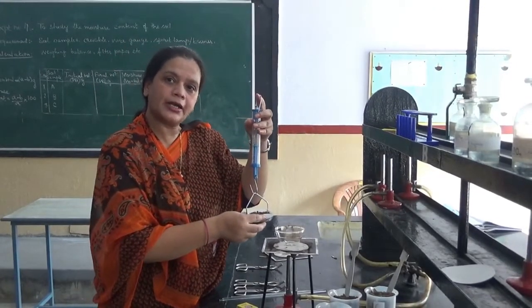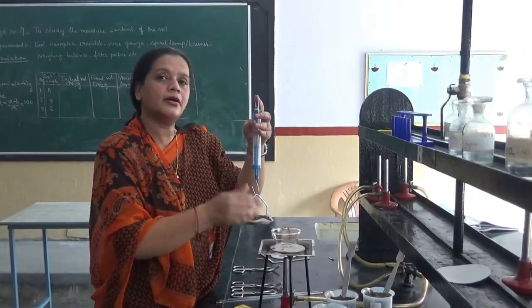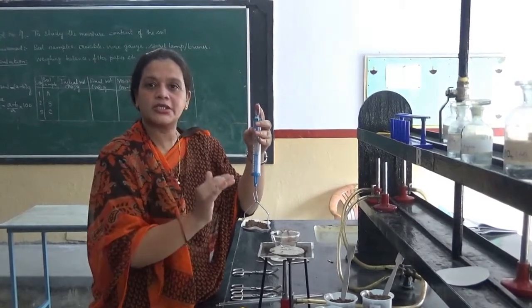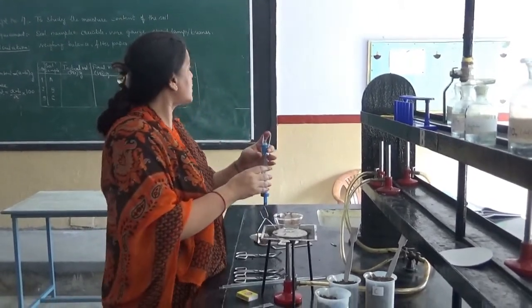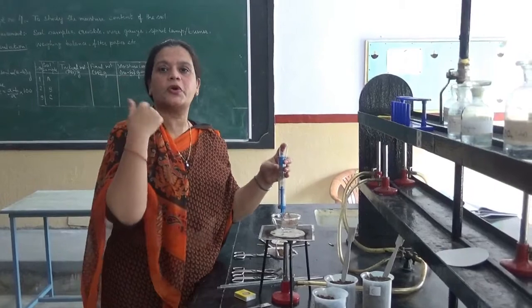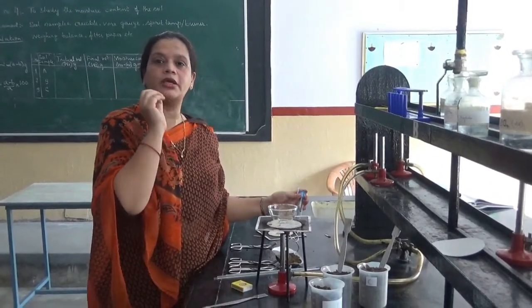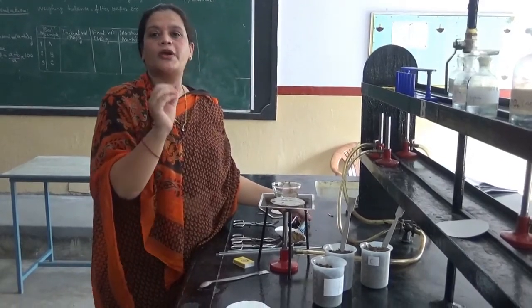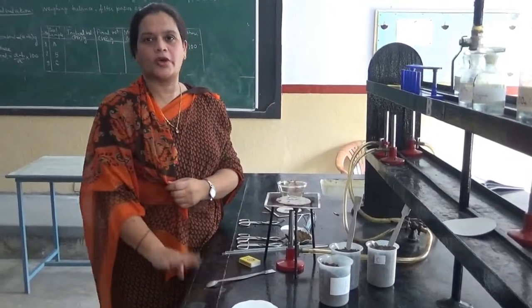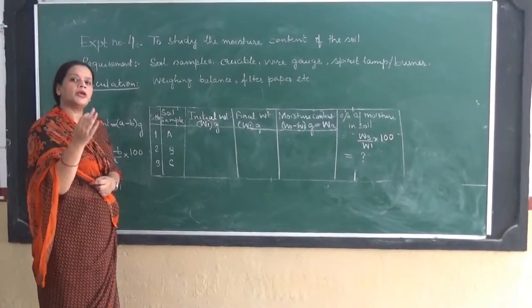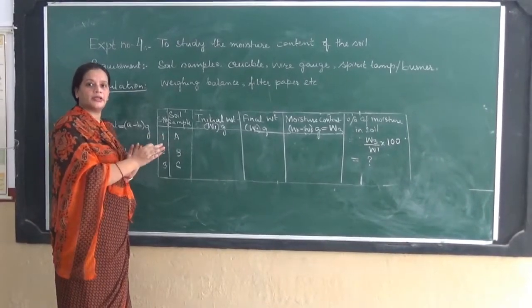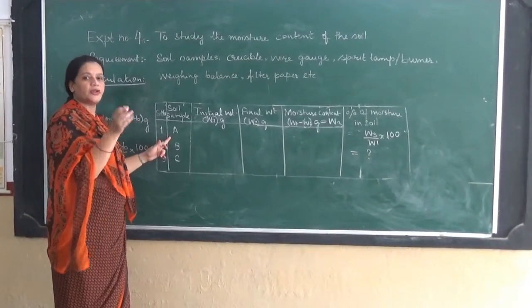I will repeat this experiment again so that the weight becomes constant. Now when you see this table or what I have shown you on the board, W1 minus W2 will give you the exact weight of the moisture which has been lost from the soil. So we can now calculate the percentage of the soil in sample A.